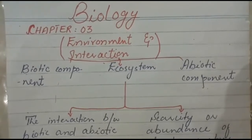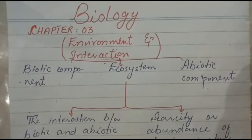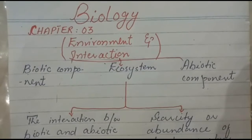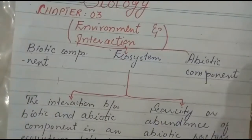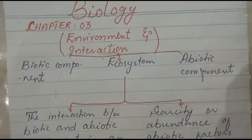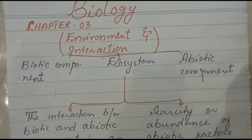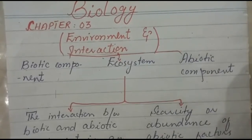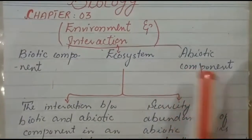The biotic components consist of producers, consumers, and decomposers. Producers are human beings, and decomposers are bacteria and fungi.